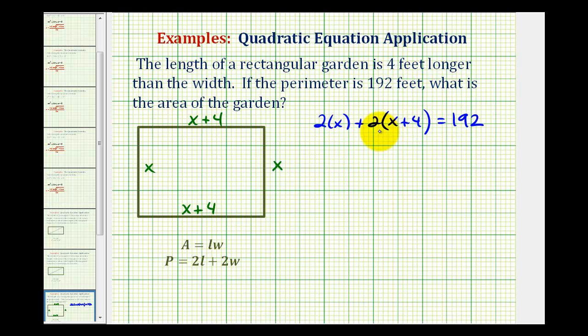So now we'll go ahead and simplify and solve for x. We have 2x plus, this would be 2x plus 8. Remember, here we're distributing. Equals 192. And we have like terms here. So we have 4x plus 8 equals 192.